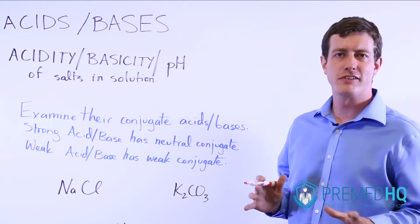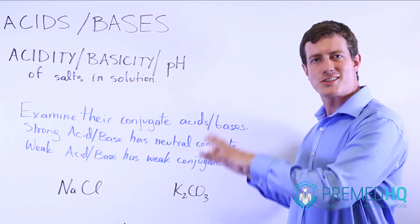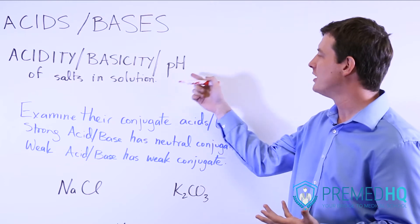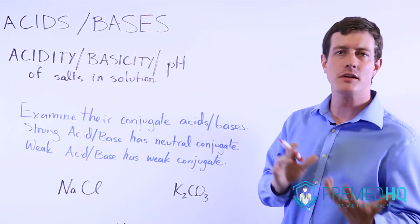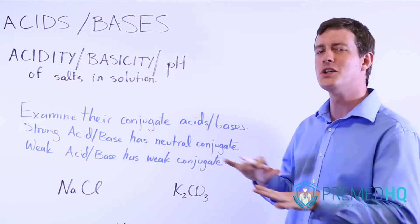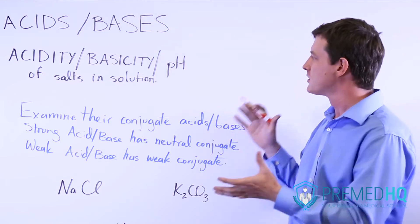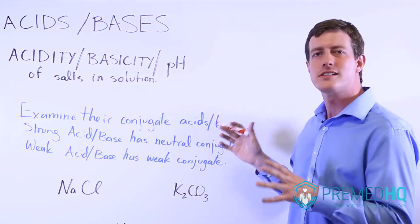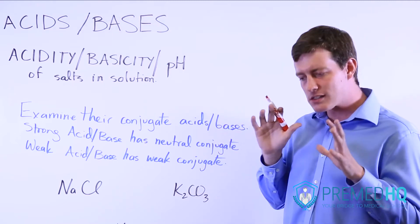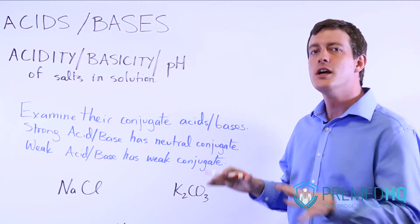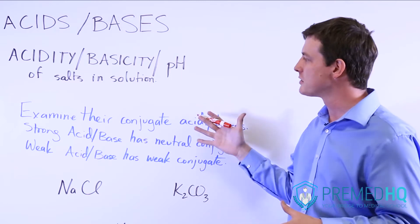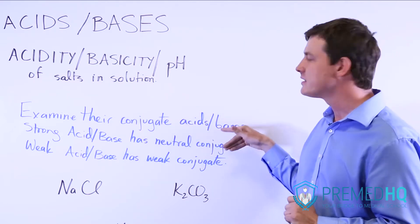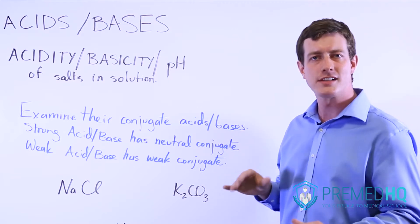Sometimes you'll be asked about the effect of putting a salt into a solution and seeing what the resulting change of the pH is — whether it becomes acidic, basic, or whether you don't really see a resulting pH change. The way to assess these is to do something commonly used in organic chemistry but also helpful in general chemistry: examining the conjugate acids and bases of the components of that salt.